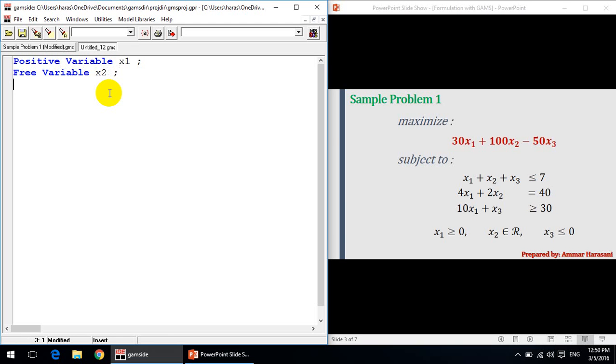Simultaneously, x2 belongs to the whole number, so it's a free variable. It could be negative, zero, or positive. So we are writing this as free variable x2, and we end the command by a semicolon. For x3, it's a negative variable x3.